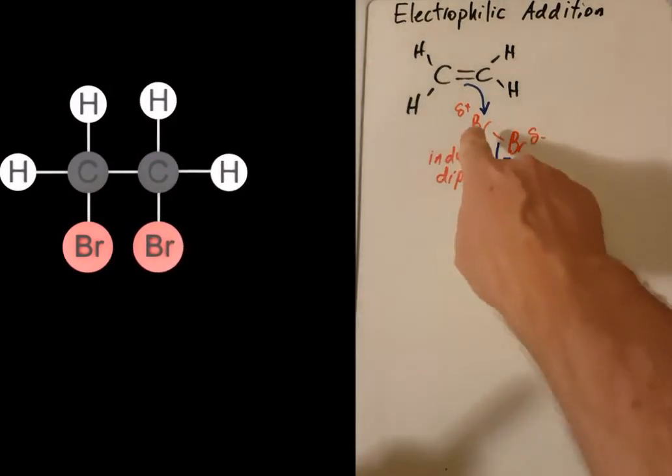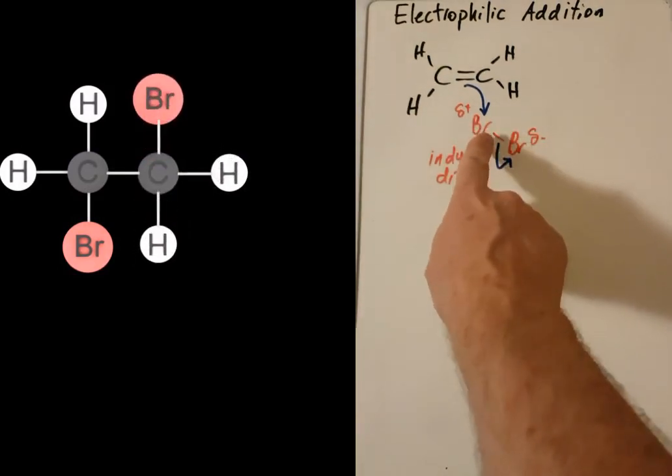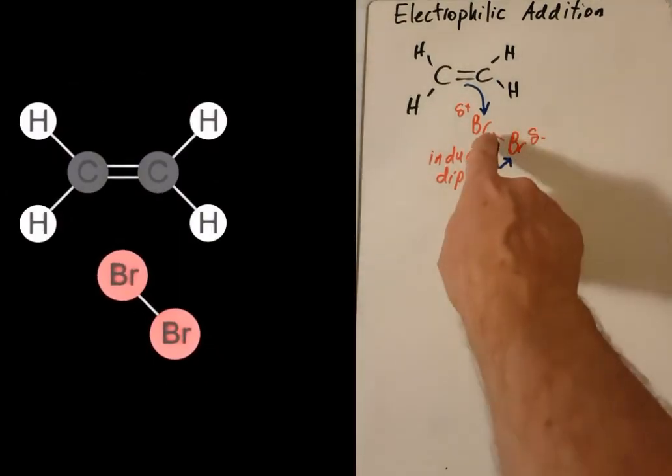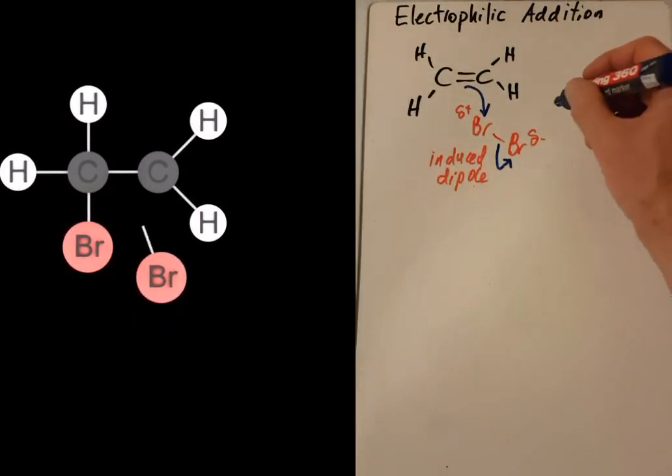You have to know the name of this asymmetrical bond splitting here. Instead of the electrons, one going to the bromine and one going to the bromine there, both electrons in the bond have gone to this bromine. So that is a heterolytic event.